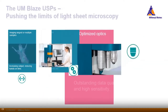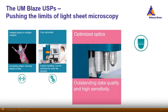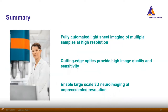We have a set of different optimized optics, which give you high data quality and high sensitivity. As a summary, the UltraMicroscope Blaze is a fully automated light sheet microscope which can image multiple samples with high resolution. It has cutting-edge optics that provide high image quality and sensitivity, enabling large-scale 3D organ imaging at high resolution.